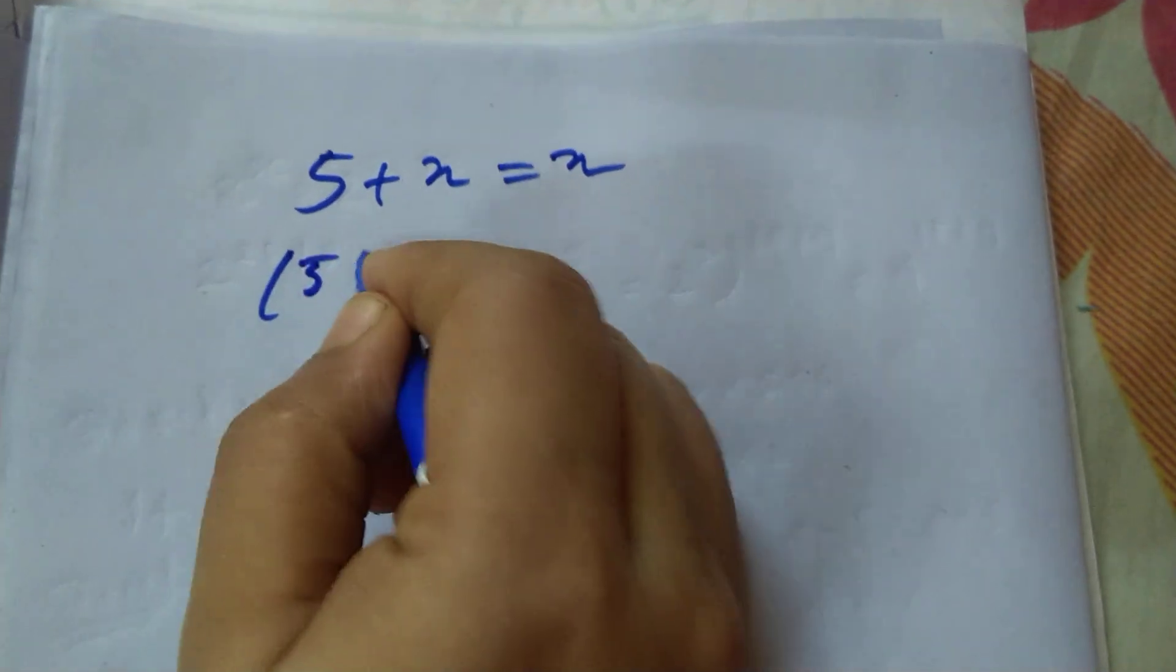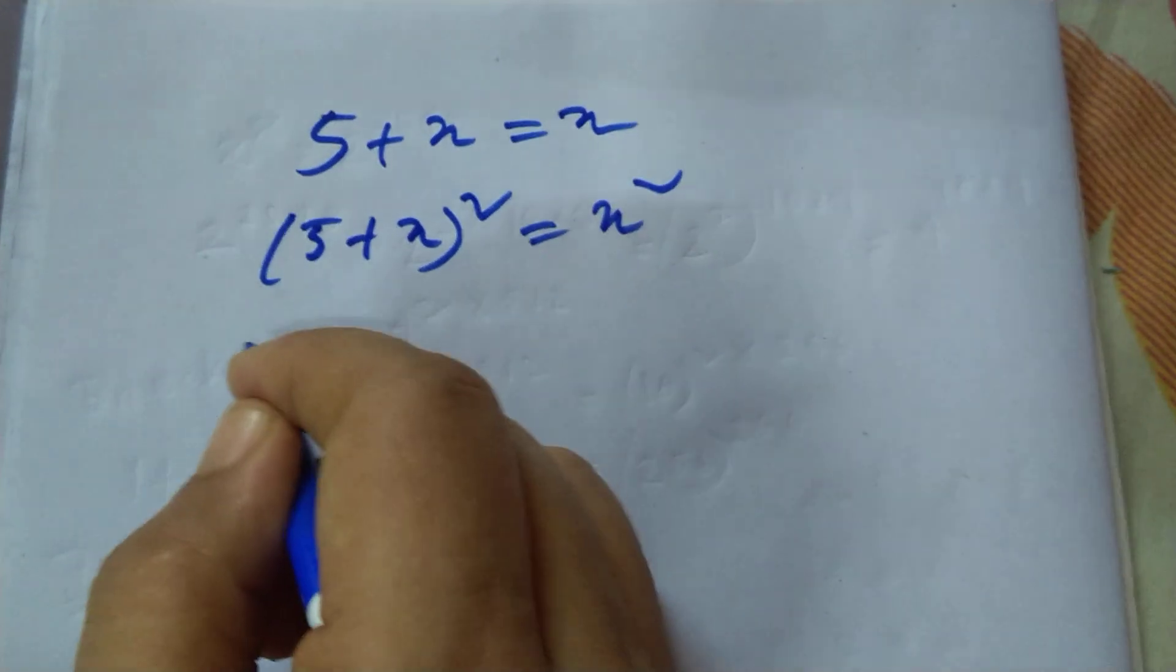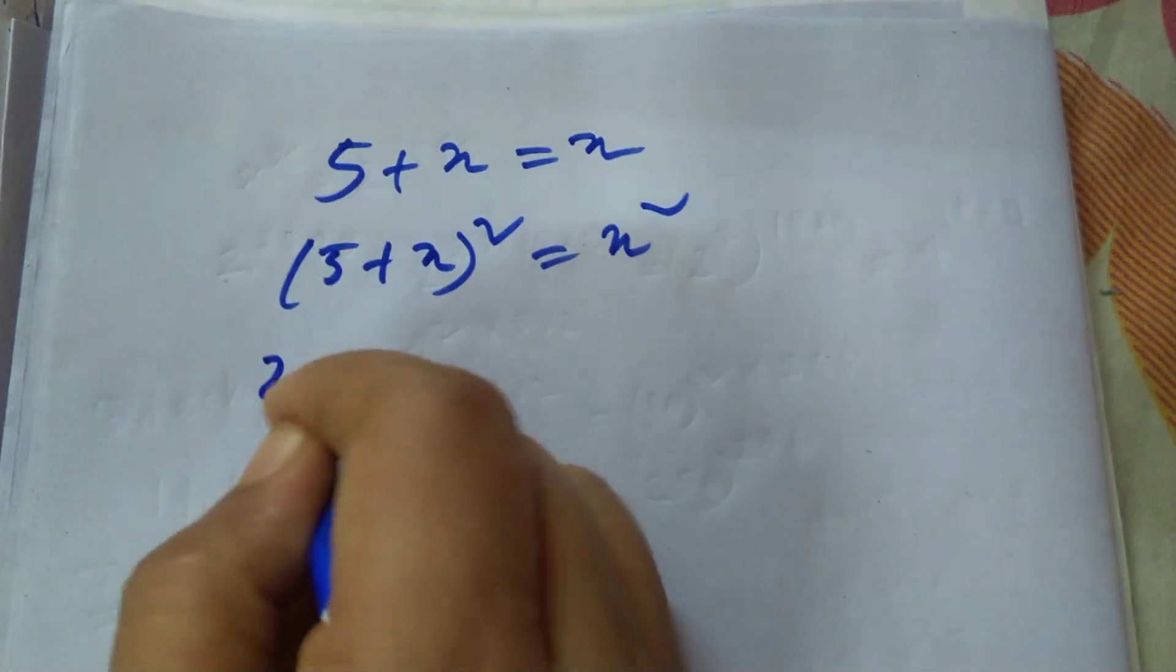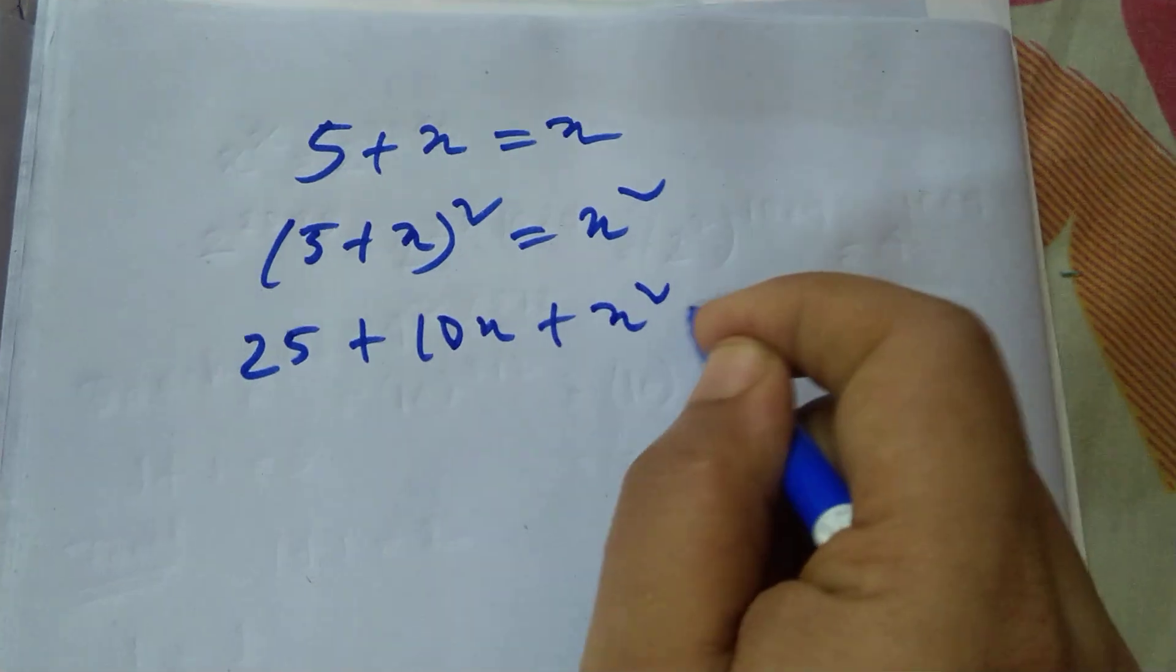How can I solve this? Just squaring both sides, so (5 + x)² = x². Applying a plus b whole square, so it is 25 + 10x + x² = x².